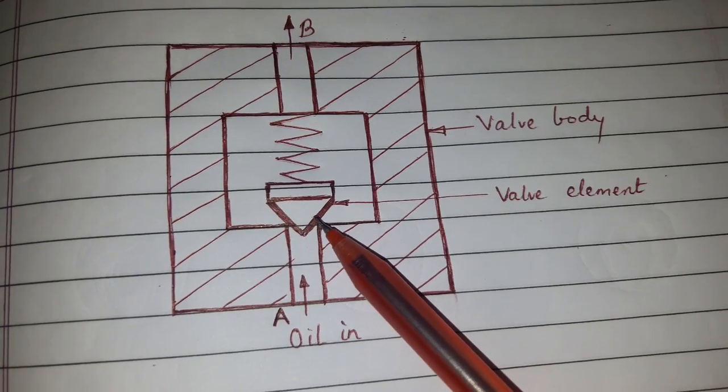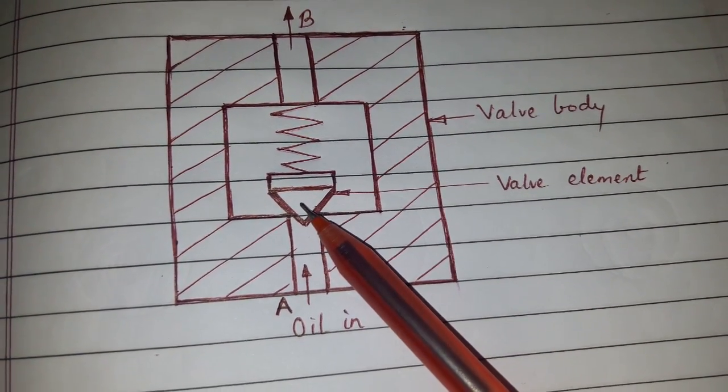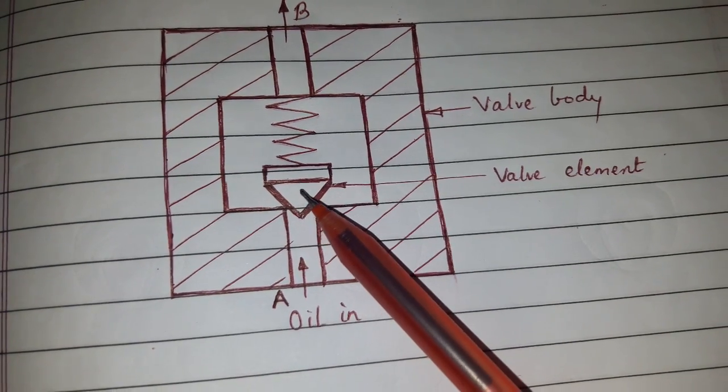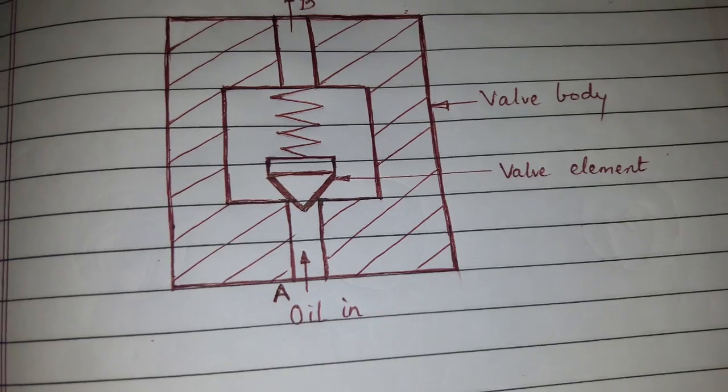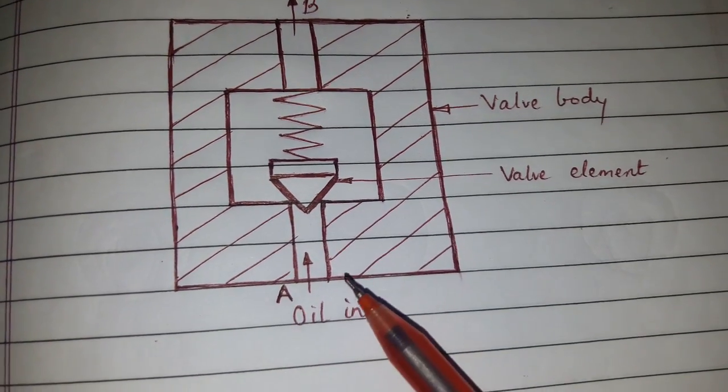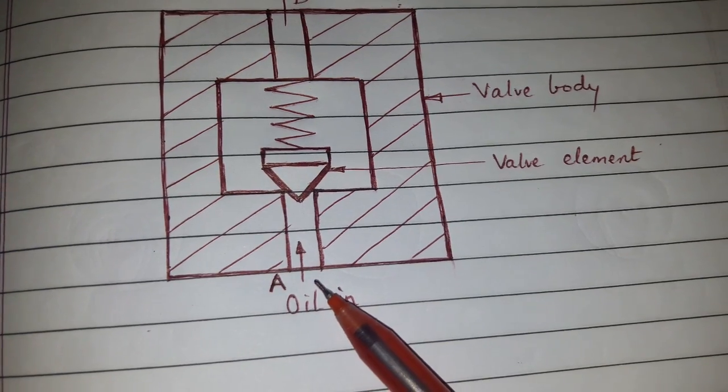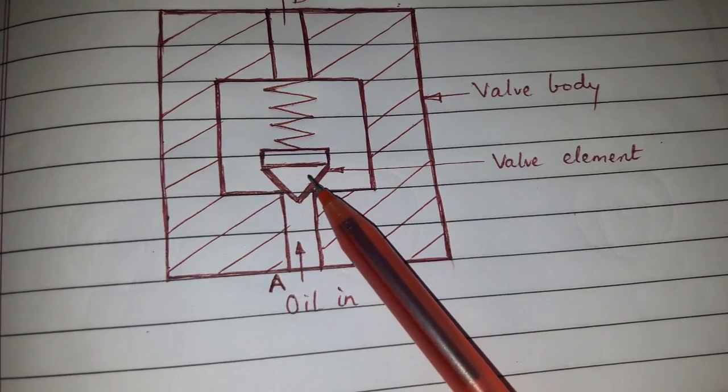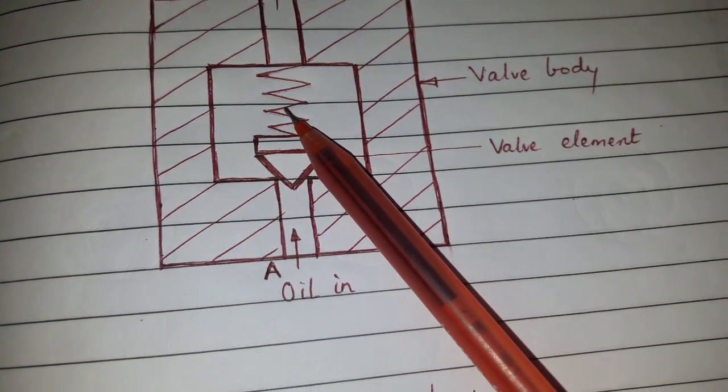With specially designed spring, in place of cone we can also use ball or special puppets. The working: when pressurized oil comes in through port A, it will lift up the cone by overcoming the spring force and the flow will start from port A to port B.